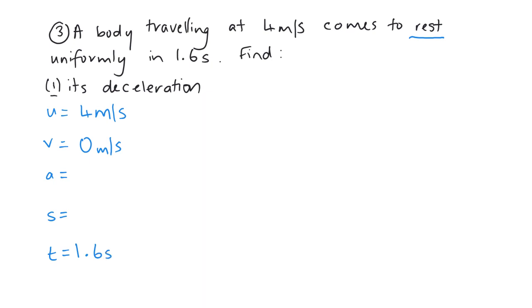Now, we've got no letter for deceleration, so we're going to have to find the acceleration, and then I'll show you how to relate them. So if we have V equals U plus AT, I have 0 equals 4 plus 1.6A. Bring my 4 over, I get minus 4 equals 1.6A, and then I'm going to divide minus 4 by 1.6, and we'll get minus 2.5 meters per second squared. And you'd expect a negative acceleration because it's slowing down.